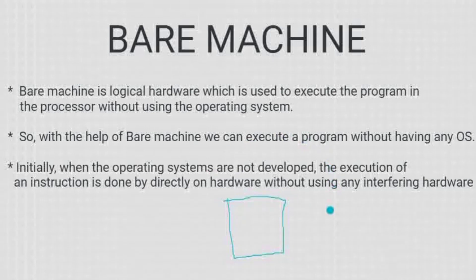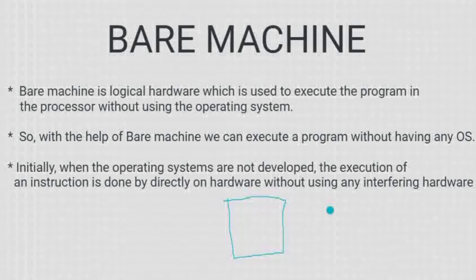Bare machine को आप किस तरह से समझ सकते हैं — आपके system में एक operating system नाम की कोई चीज नहीं है। It is a bare machine, खाली machine है, सिर्फ एक machine है। उसमें किसी भी तरह का कोई functioning, कोई logic अभी नहीं है। तो जब logic नहीं है, काम होगा कैसे? उस काम को करने के लिए आपको अपने logics खुद create करने पड़ेंगे। So bare machine is nothing but a box which is empty — उसमें कुछ भी नहीं है।